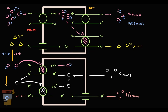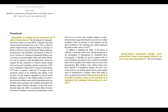Thiazide diuretics block the sodium chloride cotransporter. First of all, this causes decreased reabsorption of sodium and water, so the entry of sodium and water molecules into the blood decreases. This causes decreasing blood sodium levels, which can potentially cause hyponatremia. Hyponatremia is a well-known side effect of thiazide diuretics, most commonly occurring in elderly patients, and typically within the first two weeks of drug initiation.